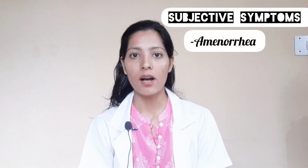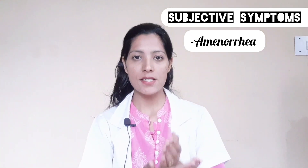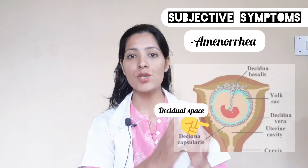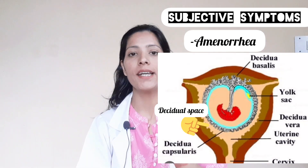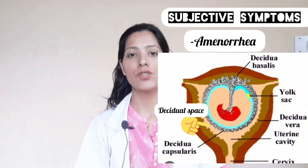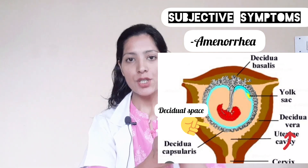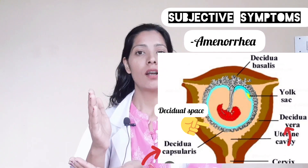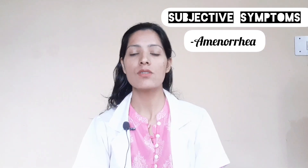The first subjective symptom is amenorrhea. Amenorrhea means absence of bleeding — the menses is missed. This happens because the decidual space is totally obliterated, meaning that space is finished, as the decidua vera and decidua capsularis are both fused.